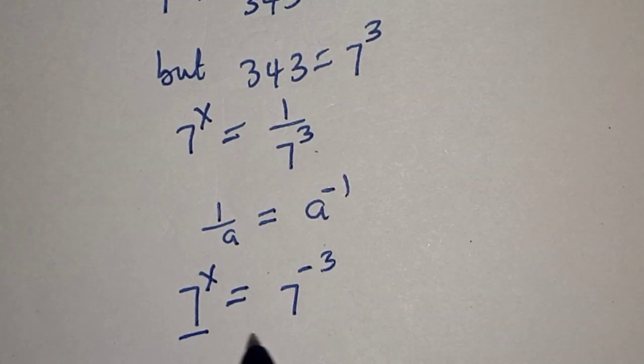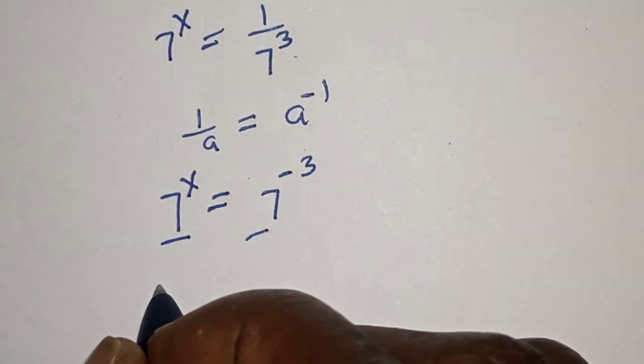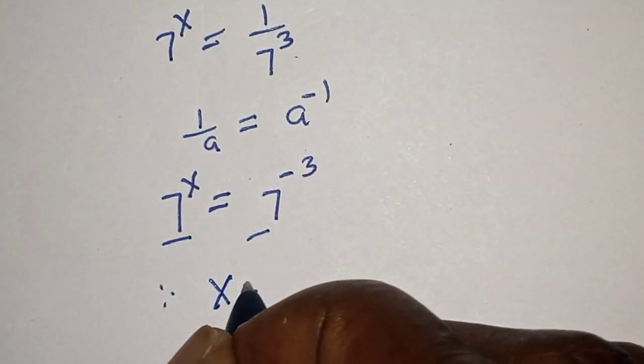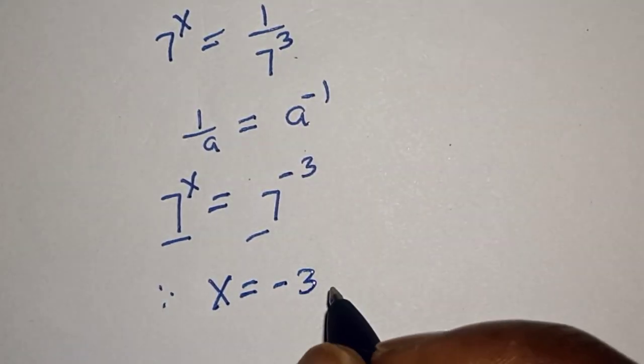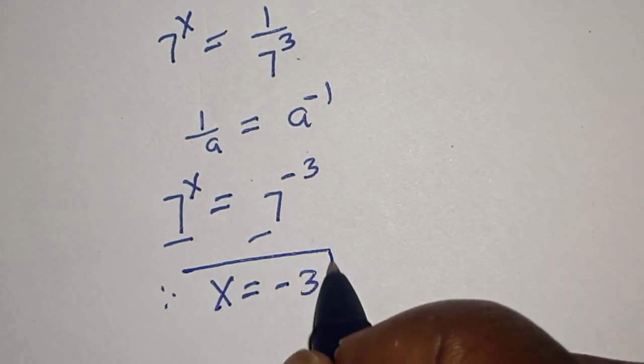They have the same base 7, therefore x is equal to minus 3, and that is our final answer.